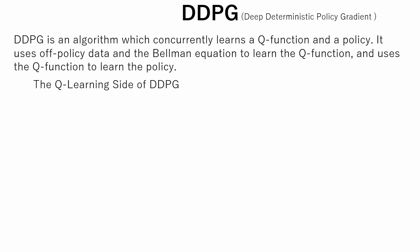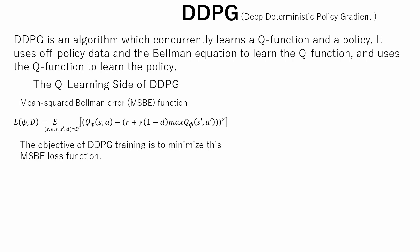Let's begin from the Q learning side of DDPG. In DDPG, we are using mean squared Bellman error function, which tells us roughly how closely Q phi comes to satisfying the Bellman equation. Here, small d indicates whether the next state is terminal. So, the objective of DDPG training is to minimize this mean squared Bellman error loss function.